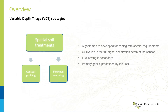Our special soil treatment programs — contour profiling and plough pan removing — were designed to search for anomalies in the topsoil mapper's full penetration depth. Therefore, in these modes, depth range setting is unavailable. These algorithms work with heavy machinery in deeper regions of the soil. In this case, we sacrifice fuel savings in order to get the most optimized depth treatment of our soil.